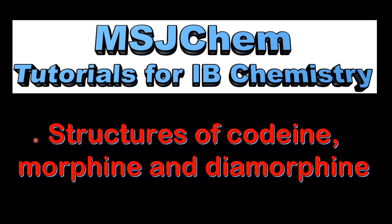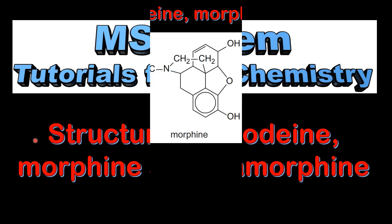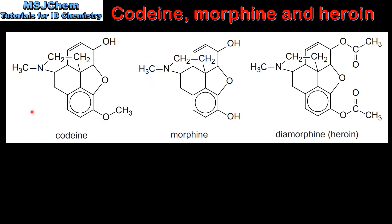This is MSJChem. In this video I'll be looking at the structures of codeine, morphine and diamorphine. Here we can see the structures of codeine, morphine and diamorphine, which can be found in section 37 of the data booklet. We'll start by looking at the functional groups which are the same in each molecule.